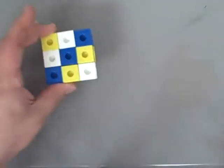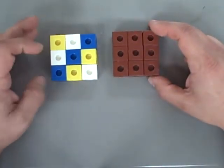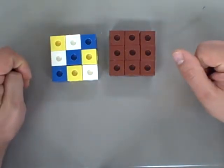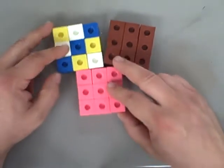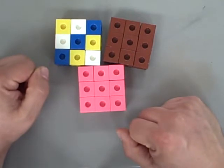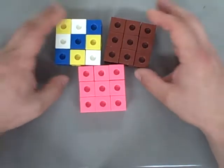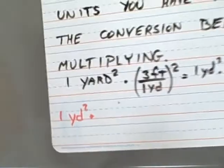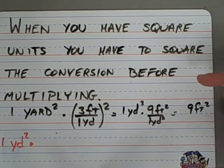Such that if I have 1 square yard, 2 square yards would be 2 times 3 squared, which would be 2 times 9, which is 18 square feet. One more, 3 square yards is 27 square feet. So when you have square units and you want to convert, you have to square the conversion before multiplying.